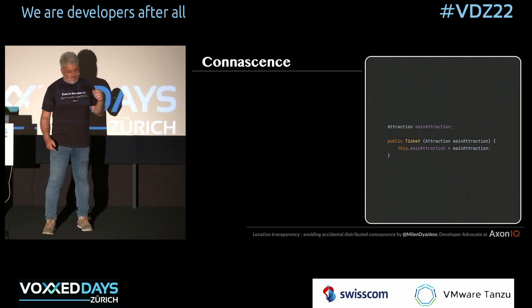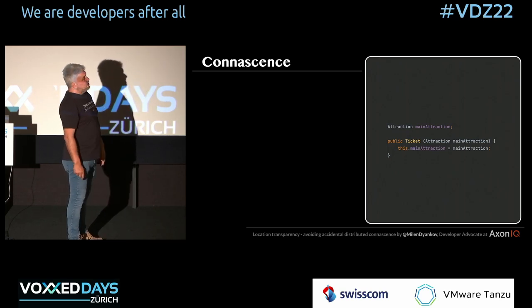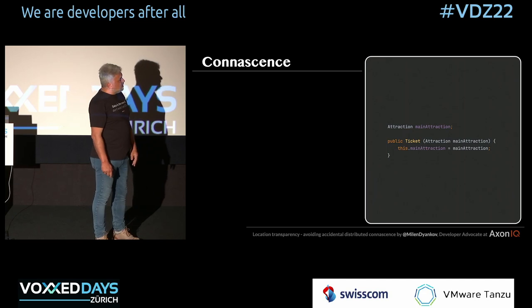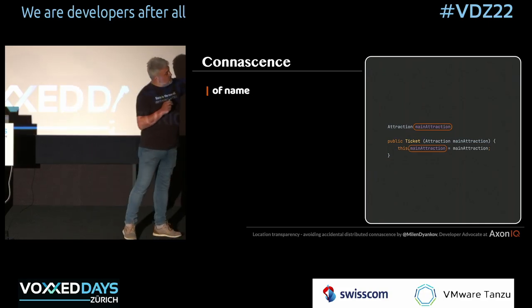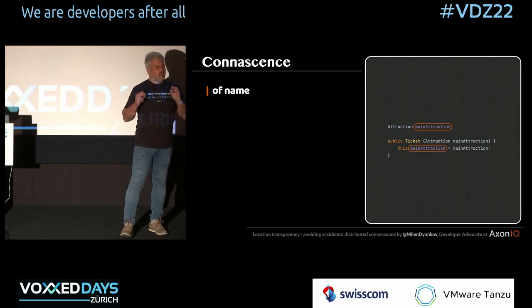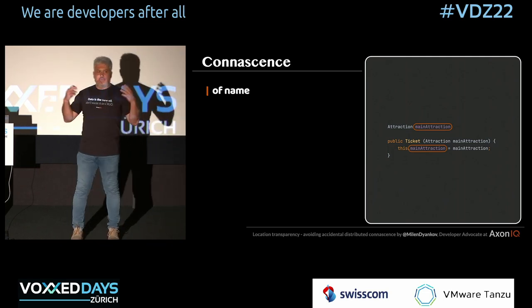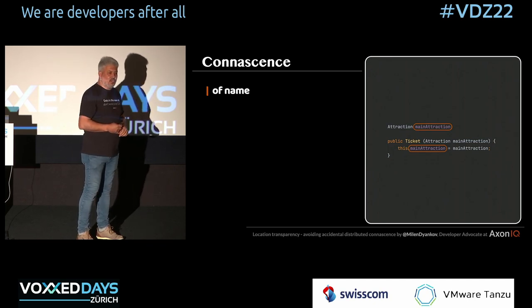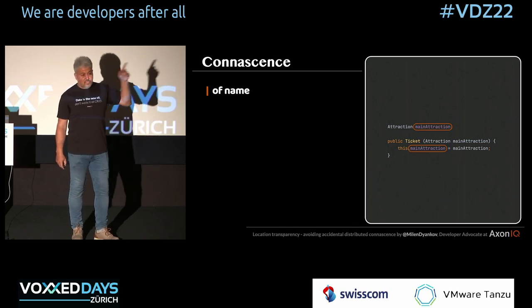Let's look at this code. It's probably the simplest code you could imagine. It's a ticket purchasing system - you have this thing called ticket, and you buy a ticket for an attraction. There is a connescence between these two. You can't change one without changing the other. This is what's known as connescence of name. It's also the thing that none of us cares about these days because we use IDEs and refactoring tools that do the job for us. Back in my Pascal 5 days you'd have to go change all this by hand. But nowadays no one pays attention too much. But that doesn't change the fact there is a connescence of name in there.